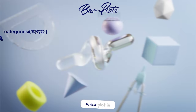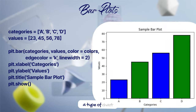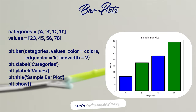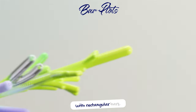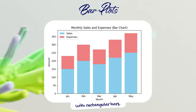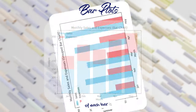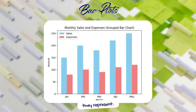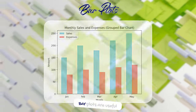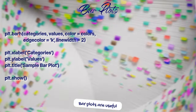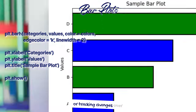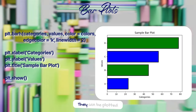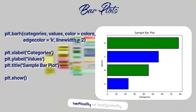A bar plot in Matplotlib is a type of chart that represents categorical data with rectangular bars. The length or height of each bar is proportional to the values they represent. Bar plots are useful for comparing different groups or tracking changes over time, and they can be plotted vertically or horizontally.